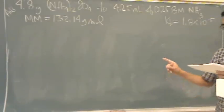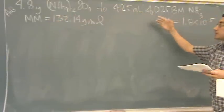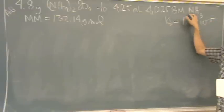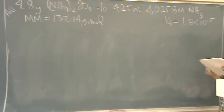So buffers prepared by adding this to this. You know it's a buffer because it's acid with its weak conjugate base. They're both weak. It has to be a buffer. They want you to find pH.